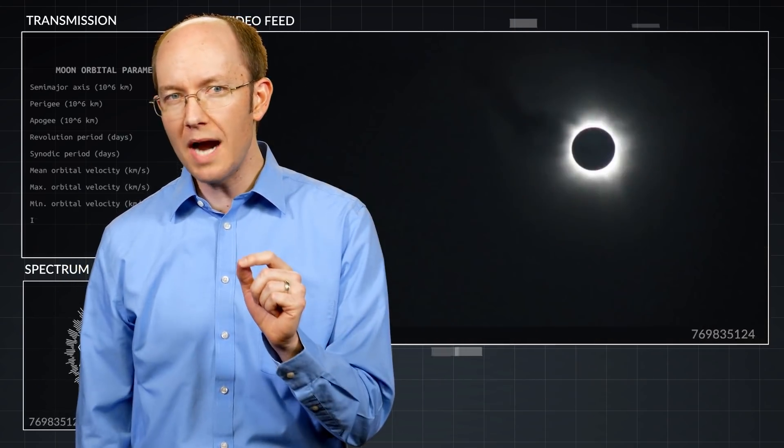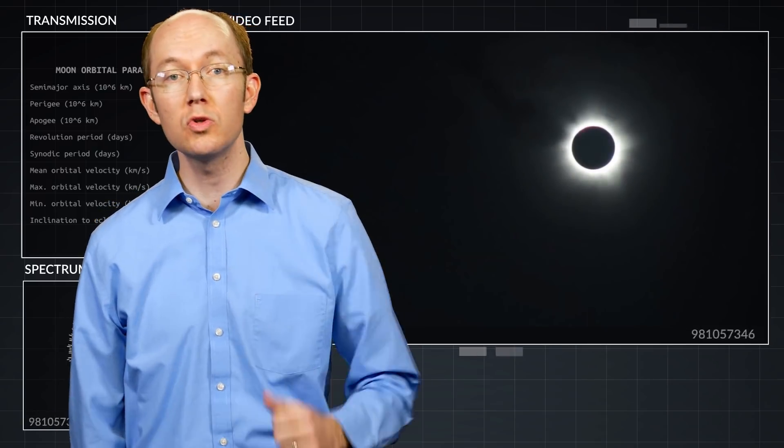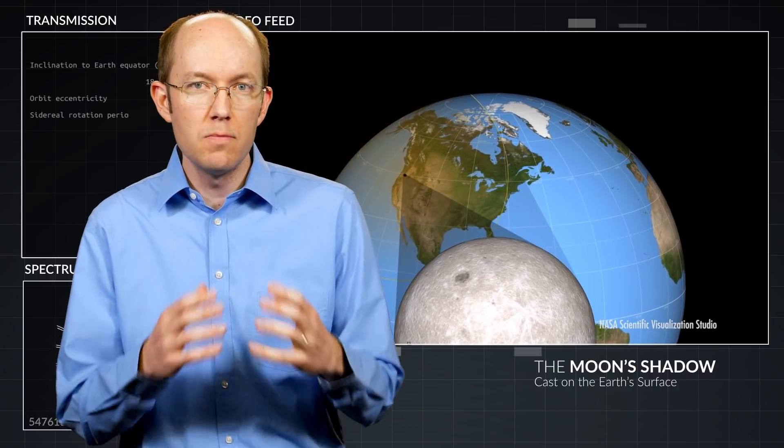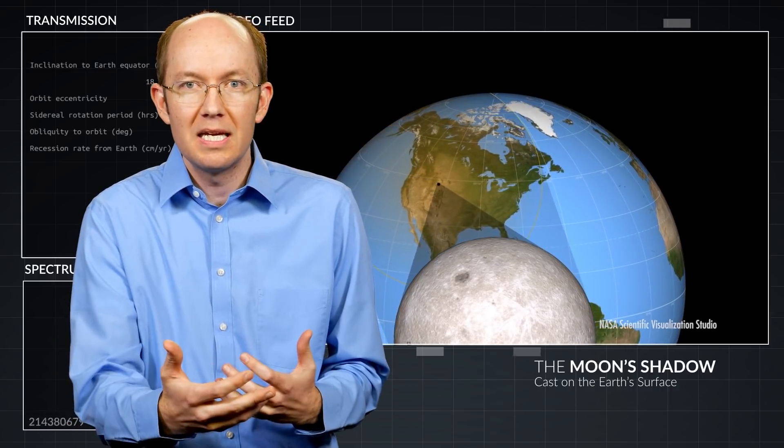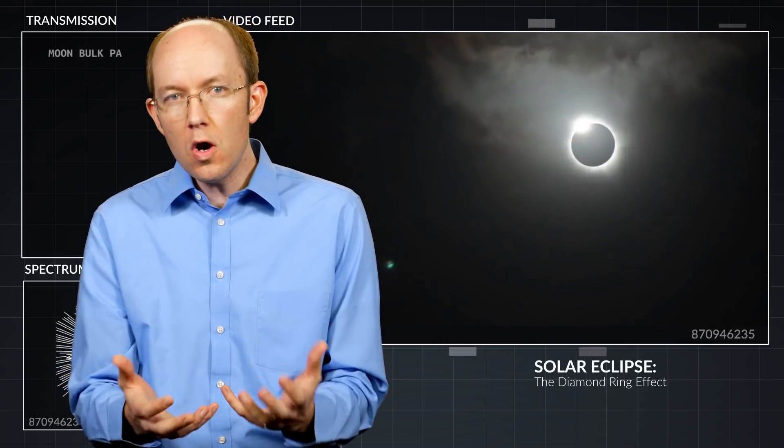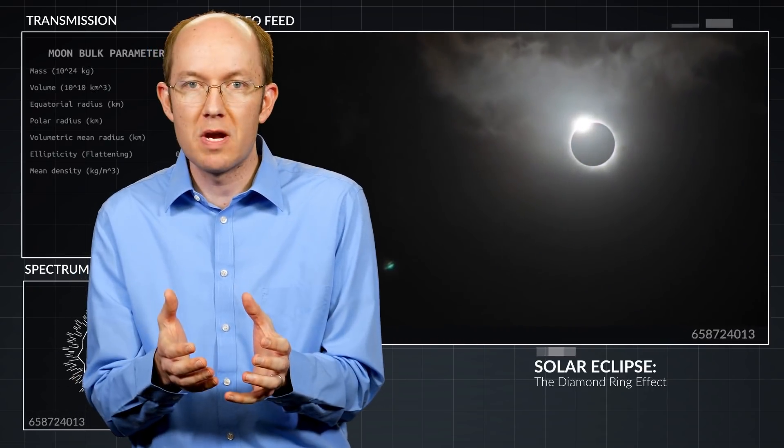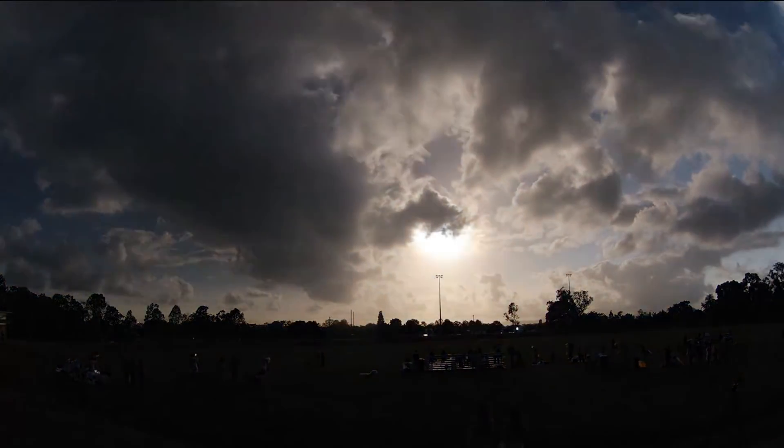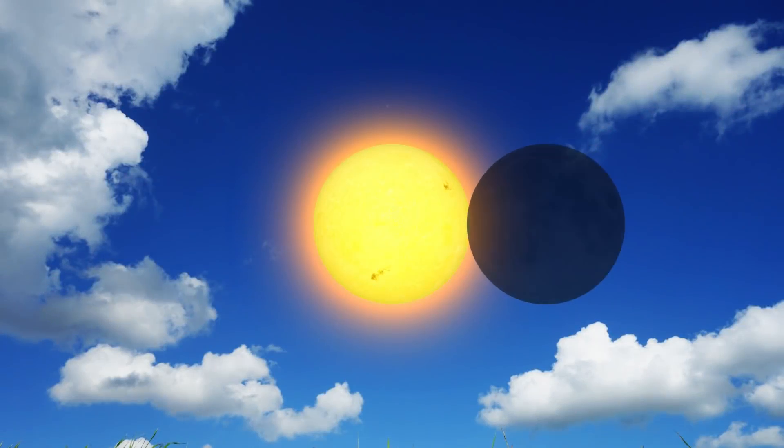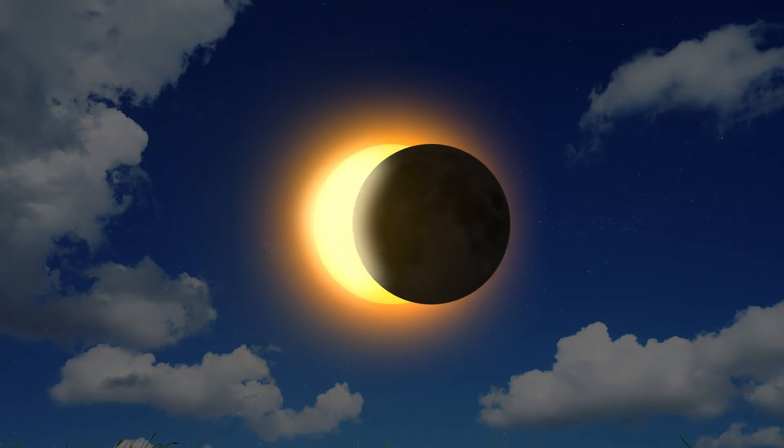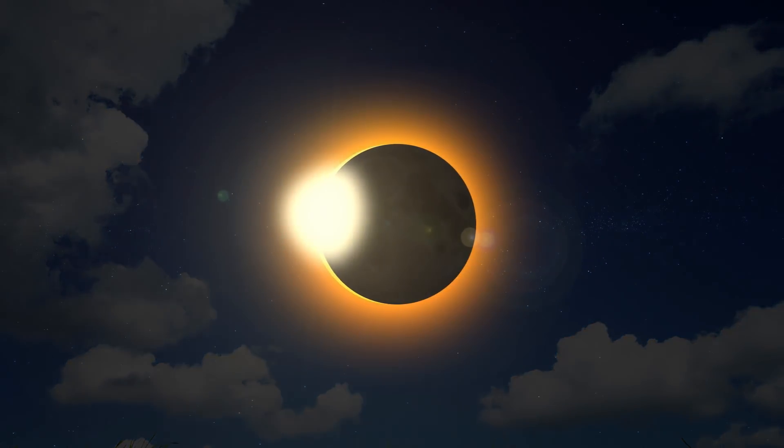Since it requires such a precise alignment, each total solar eclipse is only visible for a few minutes, to the region where the moon's shadow casts as it travels across the earth's surface. For those who are in this narrow strip, the encounter is a full sensory experience. The sky darkens and stars become visible, the temperature drops noticeably by several degrees, and the sounds of nocturnal animal life begin.